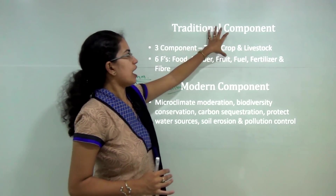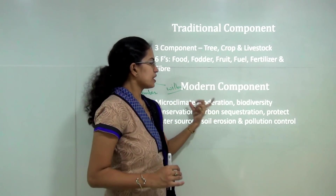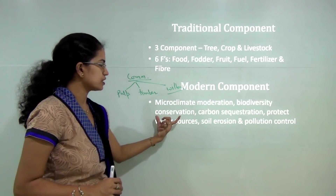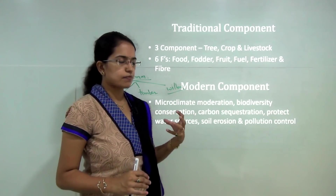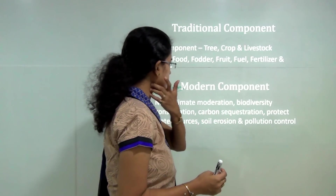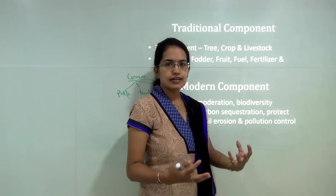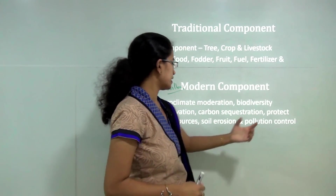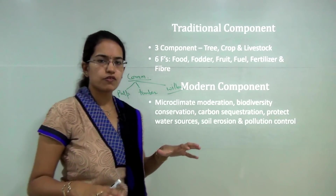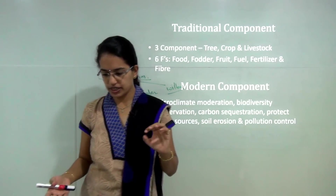Nowadays the focus has shifted beyond just obtaining the six F's. The focus has moved to microclimatic moderation, meaning planting of trees leads to climate moderation in specific regions. It also impacts biodiversity, which flourishes, and carbon sequestration increases. Additionally, it helps protect water resources, control soil erosion, and reduce pollution in a greater manner. These are the modern components that agroforestry now focuses on.